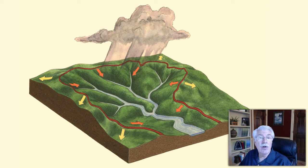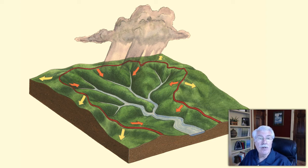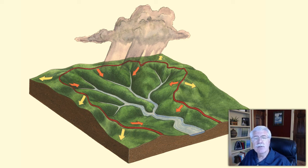If you stand on top of a mountain that divides two watersheds and you pour a glass of water from one hand onto one watershed and a glass of water from the other hand onto a different watershed, sooner or later the water from the two different glasses will end up in two different streams.